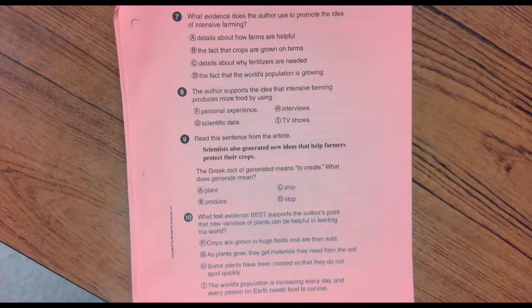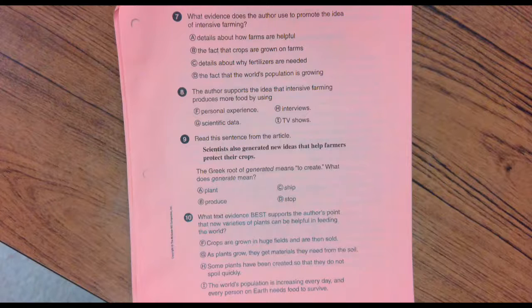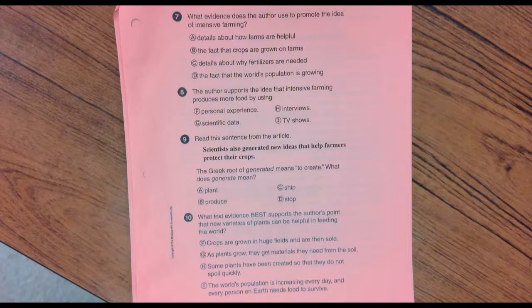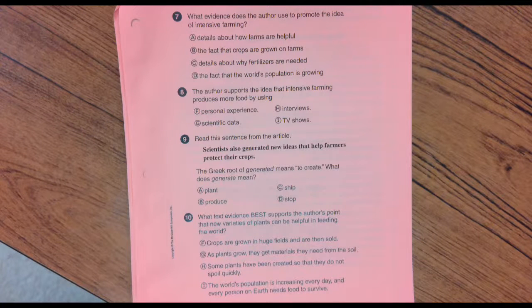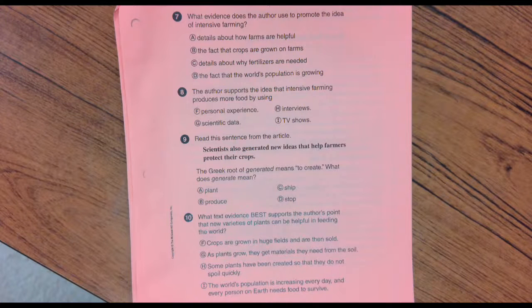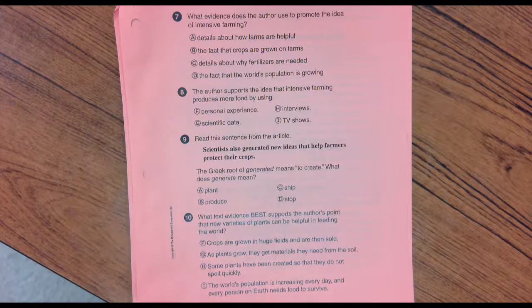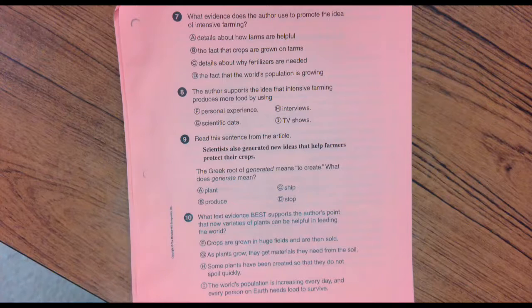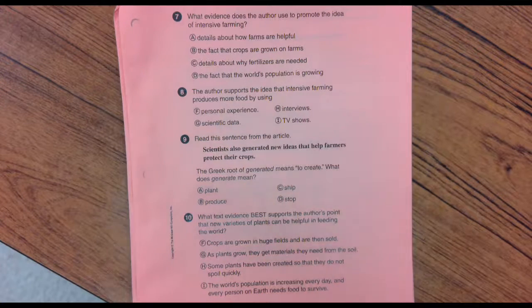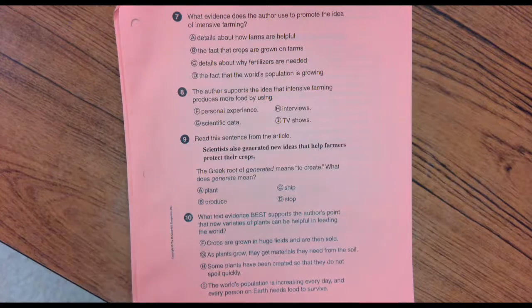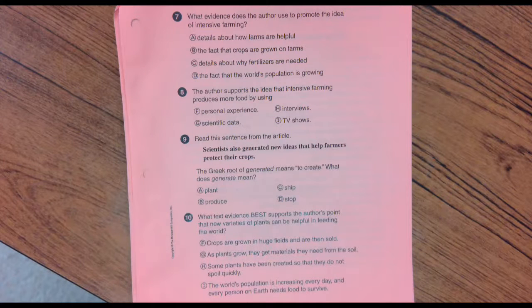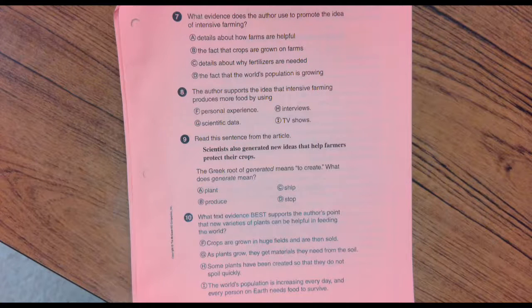Number seven. What evidence does the author use to promote the idea of intense farming? Promote means to try to sell it. Details about how farms are healthy. The fact that crops are grown on farms. Details about why fertilizers are needed. Or the fact that the world's population is growing.